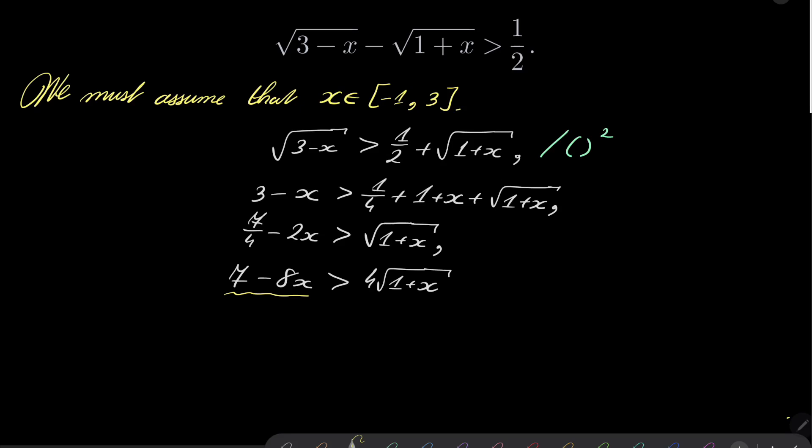Because if it is non-positive, then this inequality does not hold. So we can assume now that 7 minus 8 times x is greater than 0,